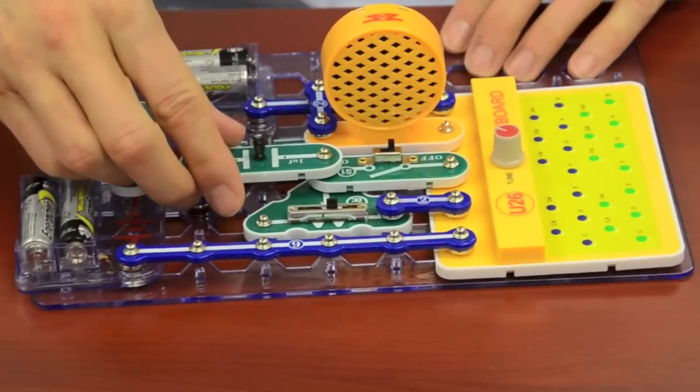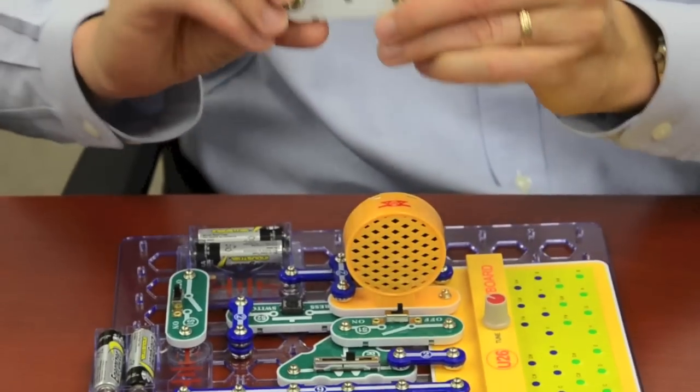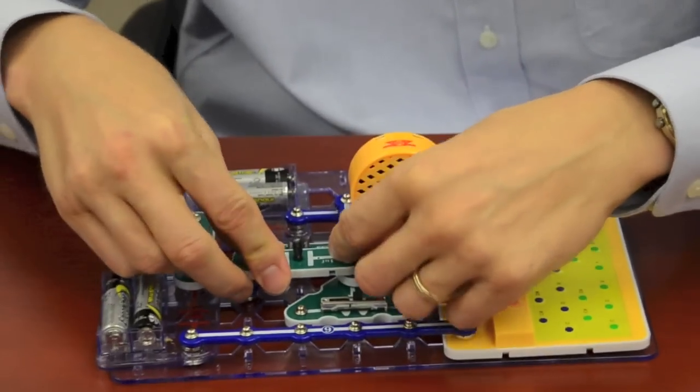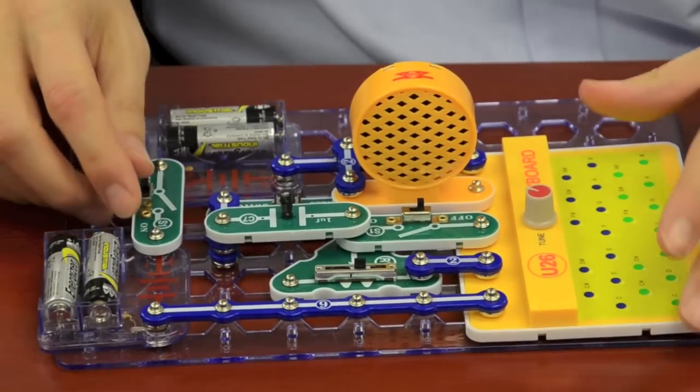This is the Snap Circuits concept where electrical components come on snaps and you just snap them together to build different circuits. This is the keyboard.